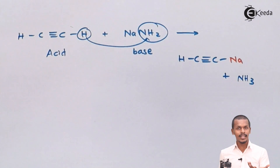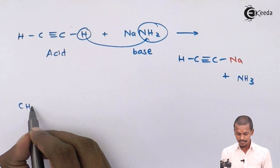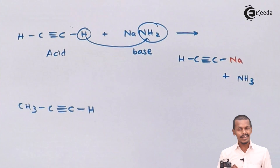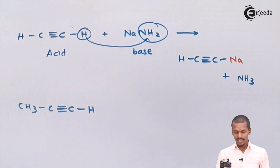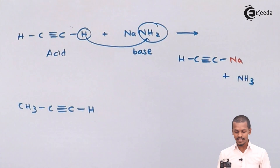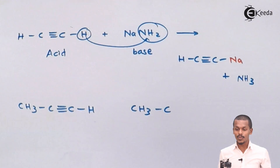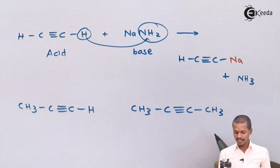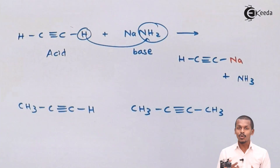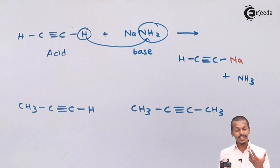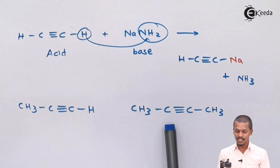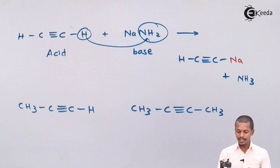Suppose we have an alkyne like this one — this can act as acidic in nature because it consists of a terminal hydrogen atom, and can react with a base like sodium amide to get a product. But suppose we have butyne where the carbon of the triple bond doesn't have a hydrogen atom — that hydrogen cannot be removed, so it won't show any reaction with NaNH2 and will not show acidic nature.